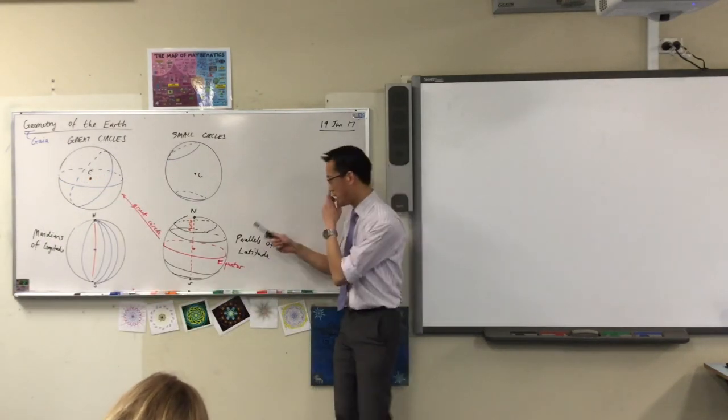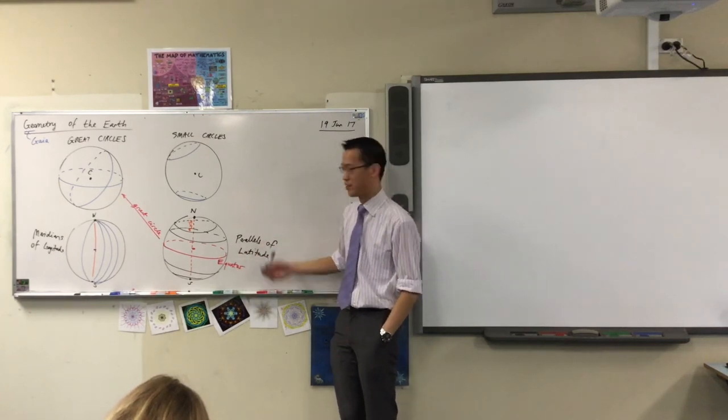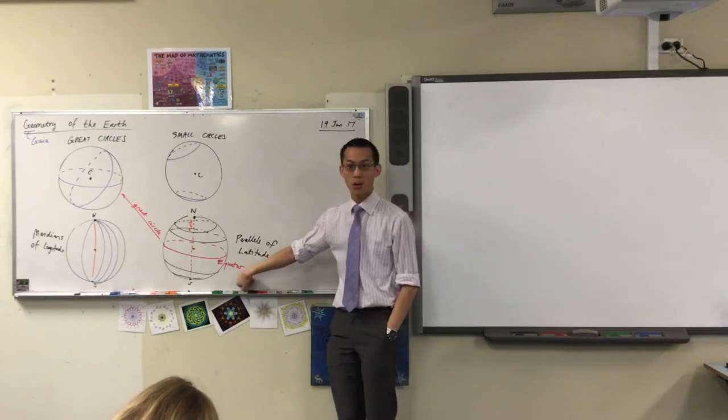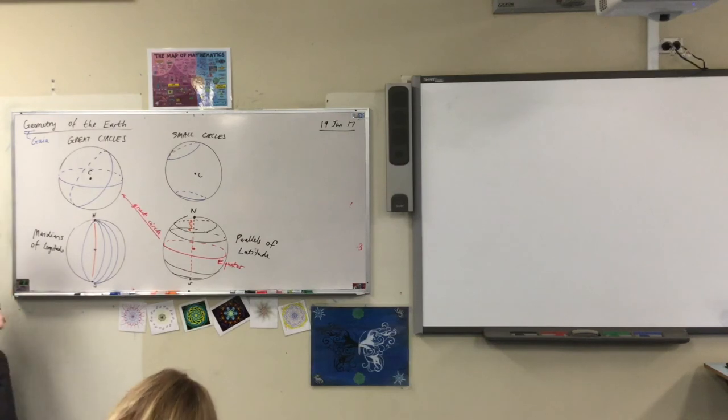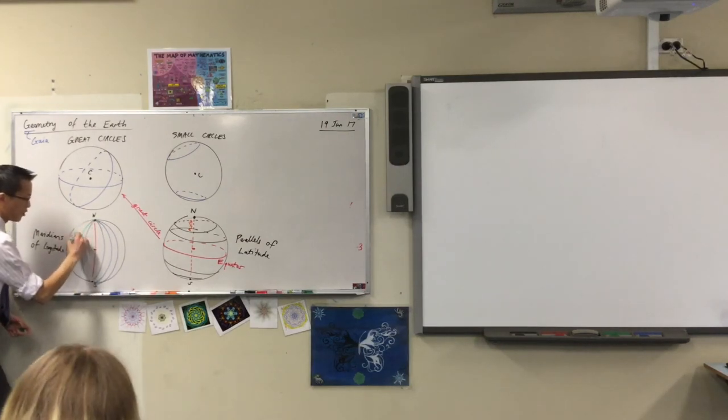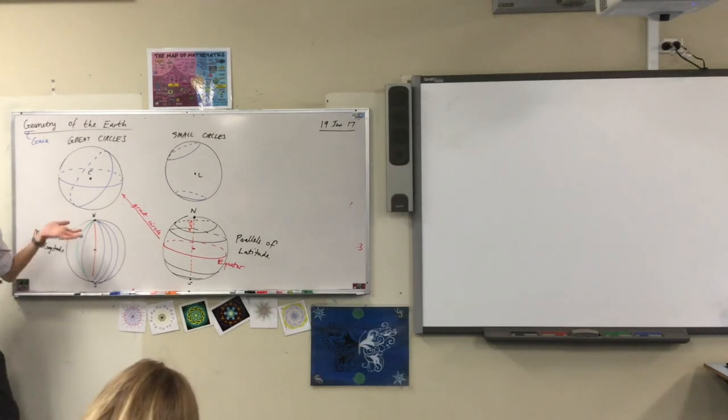Now, just like with the equator being a really special, important of the latitudes, there is one of the meridians that is more important than all the rest. And that's the... The one that goes through Greenwich, right? So, I'm going to draw this in a different color. So, we call it... I'm going to put G up here because it's in the northern hemisphere. We call this the prime meridian.